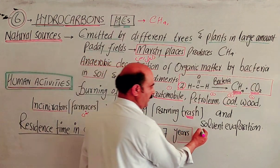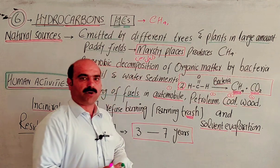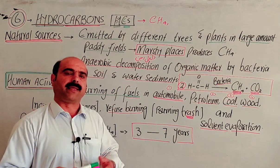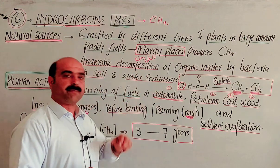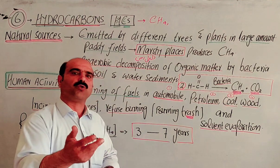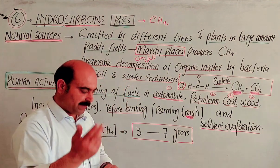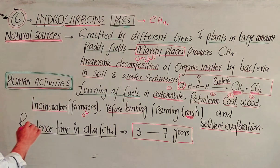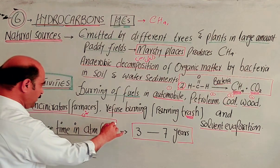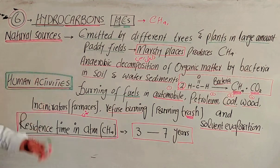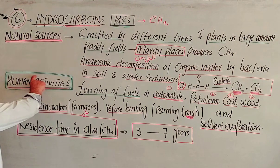Another anthropogenic source is solvent evaporation. When we do lab work or industrial work, solvents evaporate and release hydrocarbons into the atmosphere. If a chemical reaction is started, the solvent will evaporate. The most important point is that methane gas is produced in the atmosphere through both natural sources and human activities, that is, anthropogenic sources.